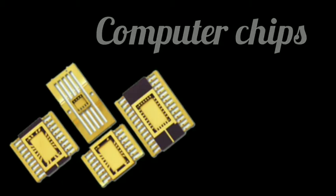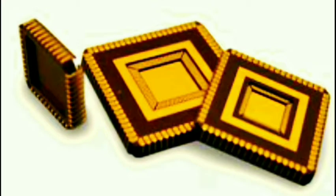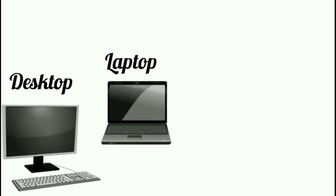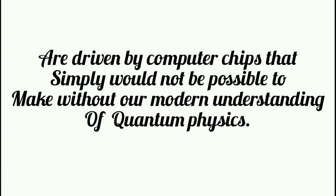Stacking up layers of silicon doped with different elements allows us to make transistors on the nanometer scale. Millions of these packed together in a single block of materials make the computer chips that power all the technological gadgets that are so central to modern life: desktops, laptops, tablets, smartphones, even small household appliances and utilities are driven by computer chips that simply would not be possible to make without a modern understanding of quantum physics.